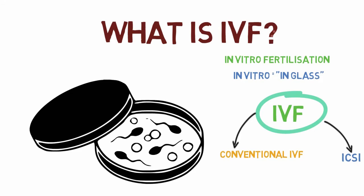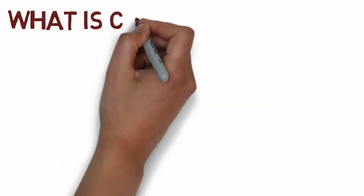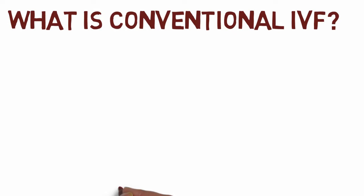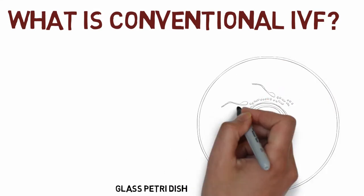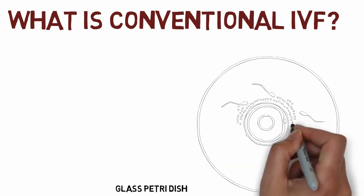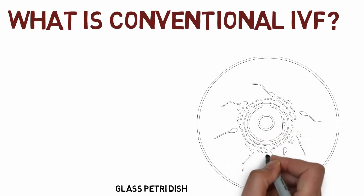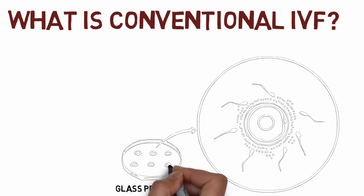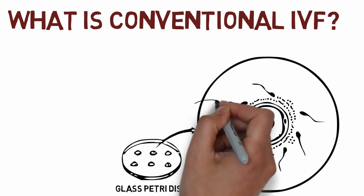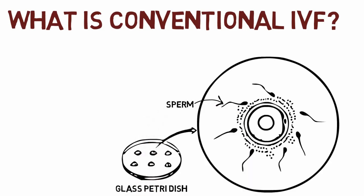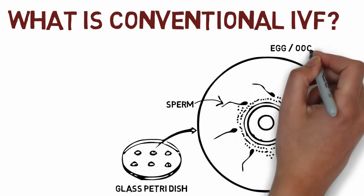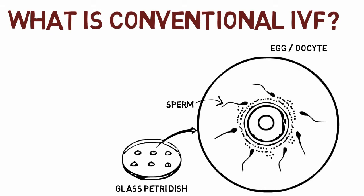Now that we understand what IVF is, let's look at what conventional IVF is. Conventional IVF, also called classical IVF, is a technique used to achieve fertilization. Oocytes or eggs are contained in a special dish with special media, and sperm are introduced to the oocytes to achieve fertilization. This process of introducing sperm to the egg is called conventional or classical IVF.